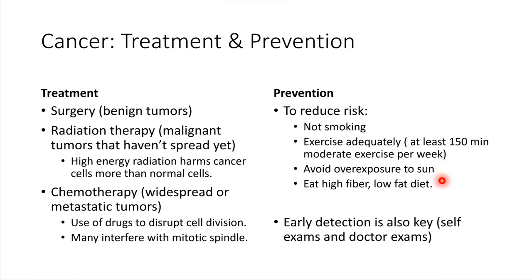Diet also plays into a lot of cancer developments. Eating a diet that is low in fat and high in fiber is very healthy. A good way to boost fiber is to incorporate whole grains — for example, buying whole grain bread instead of white bread. If cancer does develop, it's very important to detect it early so it can be dealt with before it has a chance to spread. Doing self-exams and keeping regular doctor appointments for normal checkups is all very good to do.